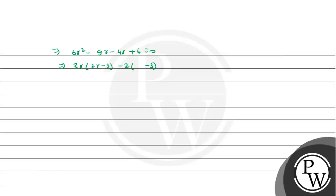So 2 R minus 3 common gives 3 R minus 2 equals 0. That means either 2 R minus 3 equals 0 or 3 R minus 2 equals 0. Therefore R is 3 by 2, or R is 2 by 3.